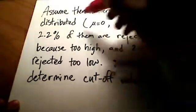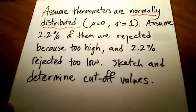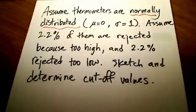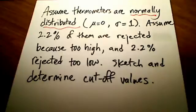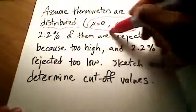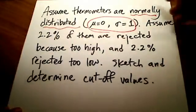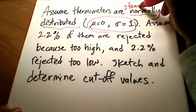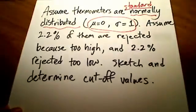As soon as you read that they are normally distributed, three things come to mind — I mentioned this in a previous video. We have a bell-shaped distribution, we have a total area under the curve which is 1, and this bell-shaped distribution is symmetrical. As soon as you see a mean of 0 and standard deviation of 1, not only do we have a normal distribution, but we have a standard normal distribution.